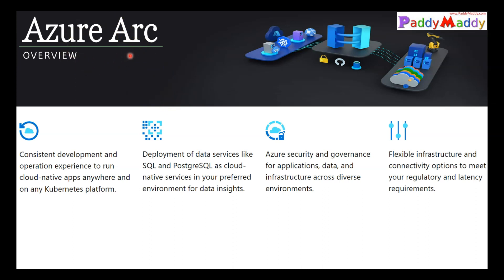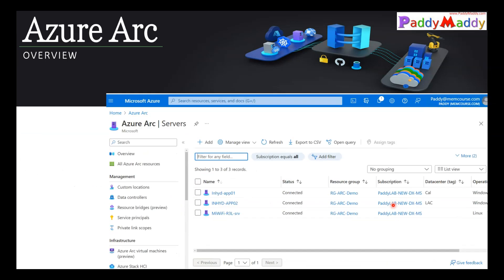Azure Arc gives you consistent development scenarios for cloud-native application support including the Kubernetes platform, from Azure or from your on-premises infrastructure. The same applies for SQL services from on-premises. You could also apply baselines or policies from your Azure portal to your on-premises servers for governance, once they are onboarded to Azure Arc. You also have flexible connectivity options — private endpoints, public endpoints, or ExpressRoute — and you can monitor from a regulatory or latency requirement point of view.